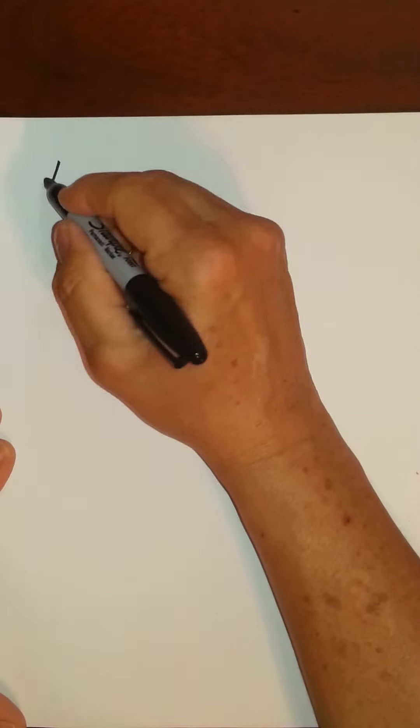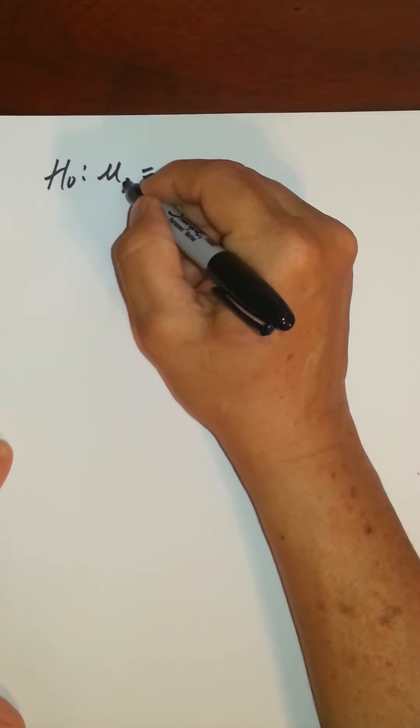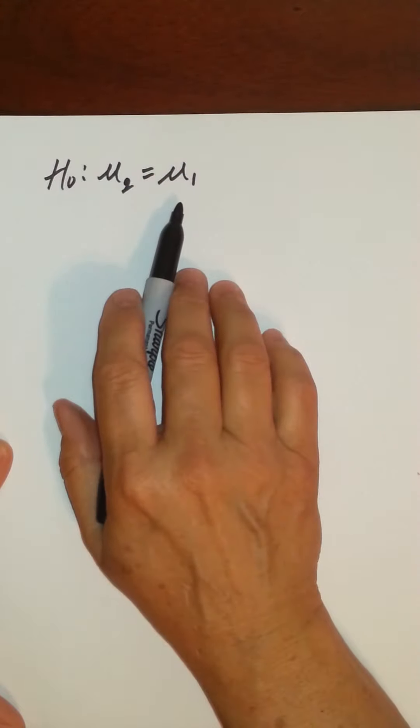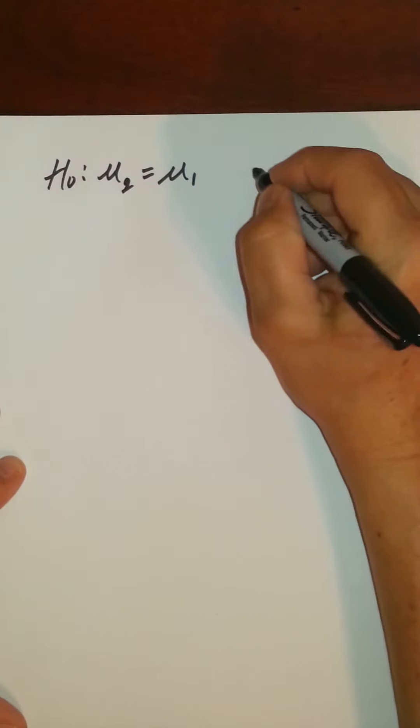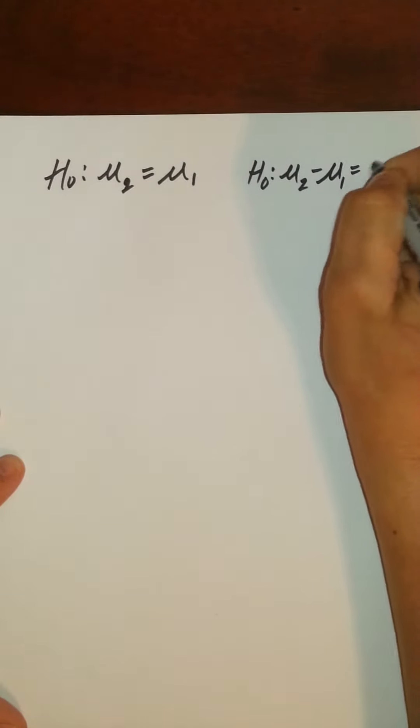So we would say for the null, again when you're dealing with two populations you always assume that the two are the same, or that their difference is zero. So you could also say Mu2 minus Mu1 is zero.